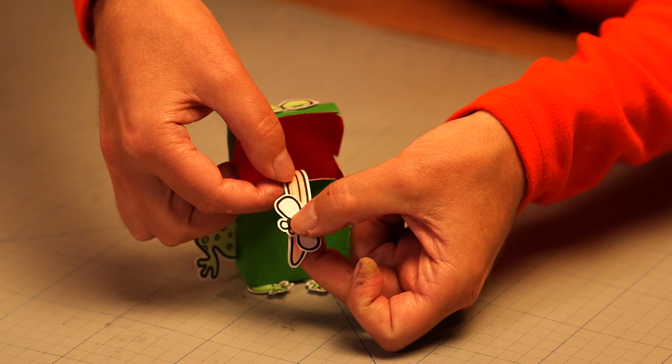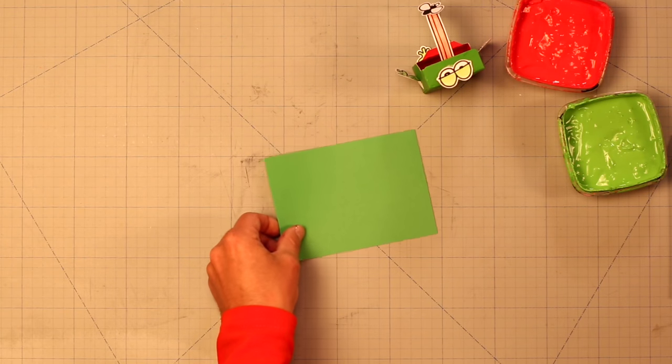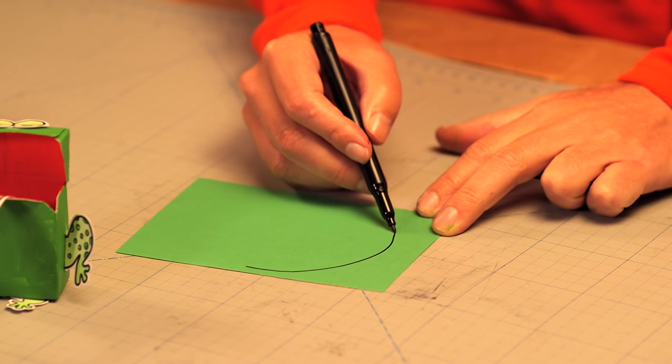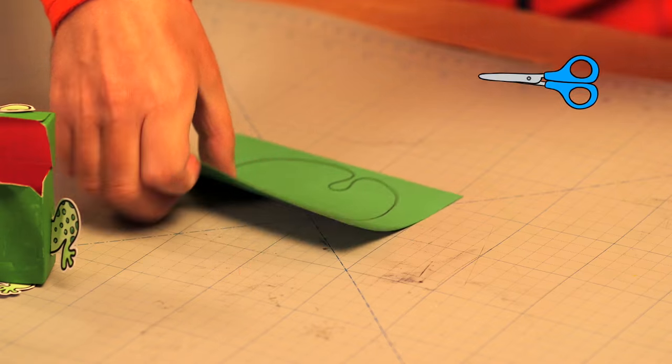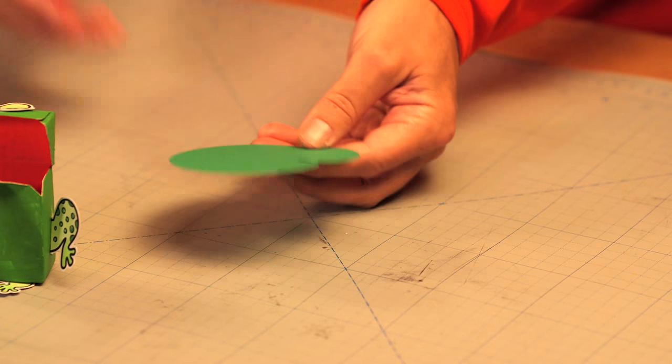Finally we stick the fly on the tongue. If you want to make the frog into a frog prince, just make a water lily leaf and the crown.